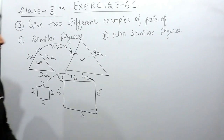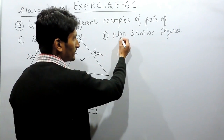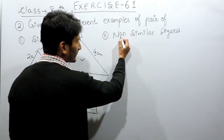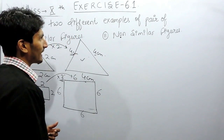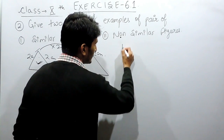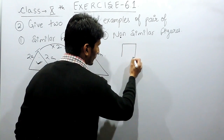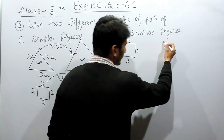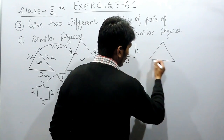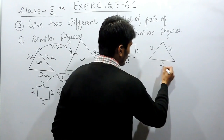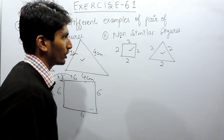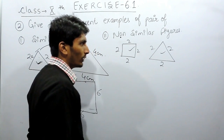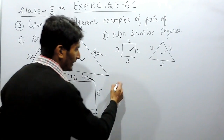Now we have to give two examples of non-similar figures. Here we have to give mathematical examples. So if I consider a square of side 2, 2, 2, 2 and a triangle of side 2, 2, 2, these two are non-similar figures because neither the shape nor the size of these two are the same.